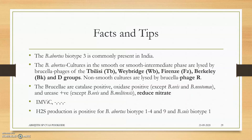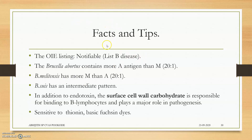Facts and tips: Brucella abortus biotype 3 is commonly present in India. They are all IMViC-negative, which can be asked in entrance examinations. Brucella are catalase-positive and urease-positive, with some exceptions. H2S production is positive for Brucella abortus. Brucella is OIE-listed and notifiable. Brucella abortus has more A antigen — 20 A and 1 M antigen. Brucella melitensis has more M antigen — 20 M and 1 A antigen.